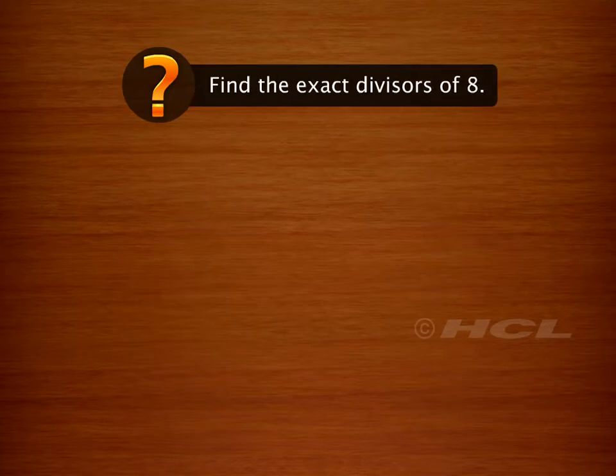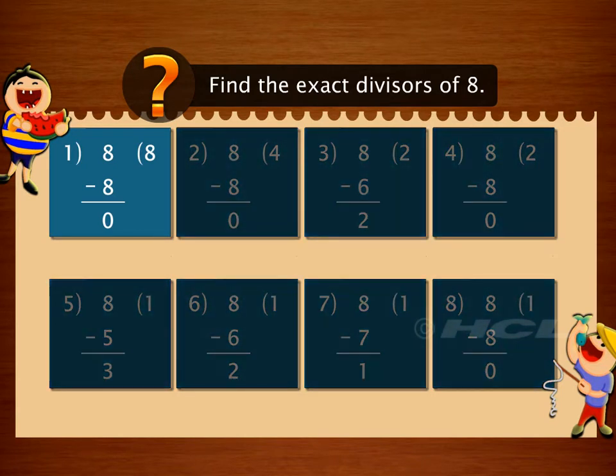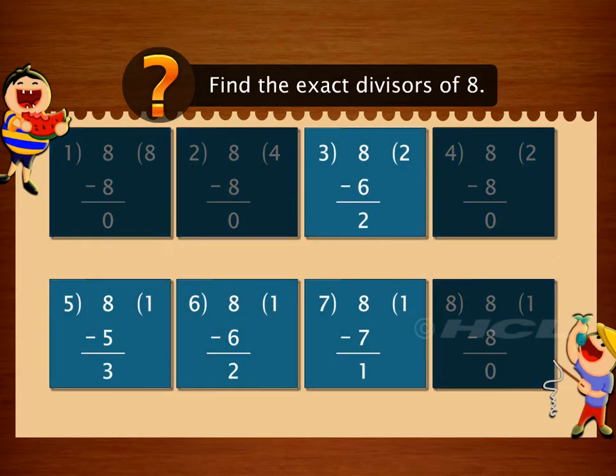Now let's find the factors of eight. We will start dividing by numbers that are smaller than eight. Note that the numbers one, two, four, and eight are exact divisors of eight. All other numbers give a remainder.